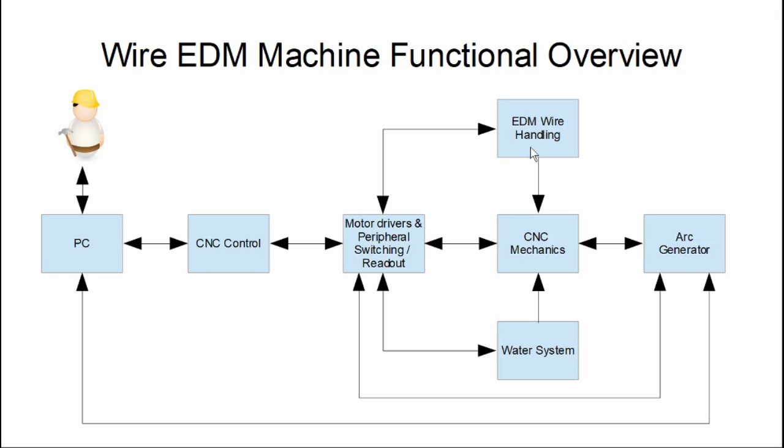Lastly, the EDM wire handling subsystem. So this contains all required functions to reel off new wire from a spool, tension it, transport it through the C-arc at the right speed, and re-reel or discard the spent wire. It interfaces only to the CNC mechanics mechanically, and the interface to the peripheral box here consists of power for the wire speed motor, power for the wire tensioning motor, and the wire brake detection signal. Okay, that's it for this schematic overview. Now let's look at some video footage of my setup.